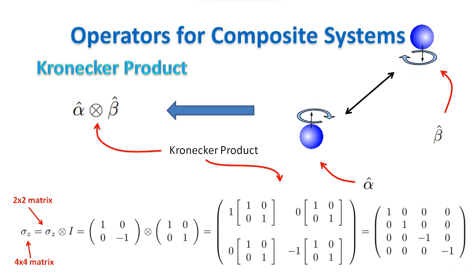In this example, we calculated the operator sigma z acting on the composite system. Note that we have used the identity operator on the second system, which is the operator acting on the system without changing it. You can check that using the two methods for calculating operators acting on composite systems, you get the same result.